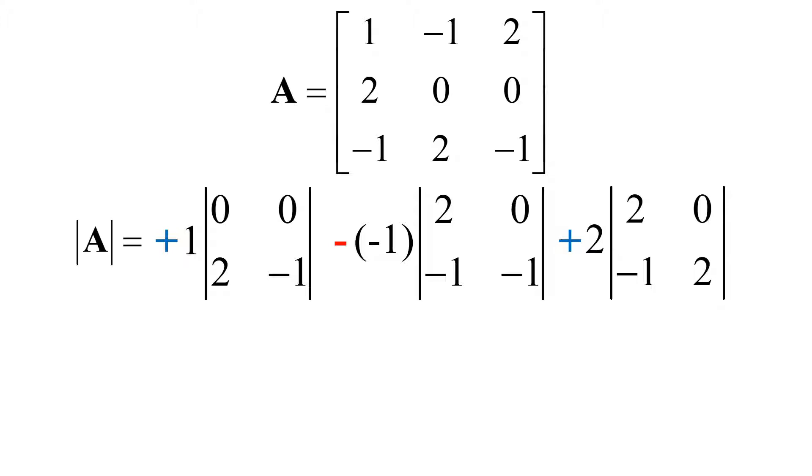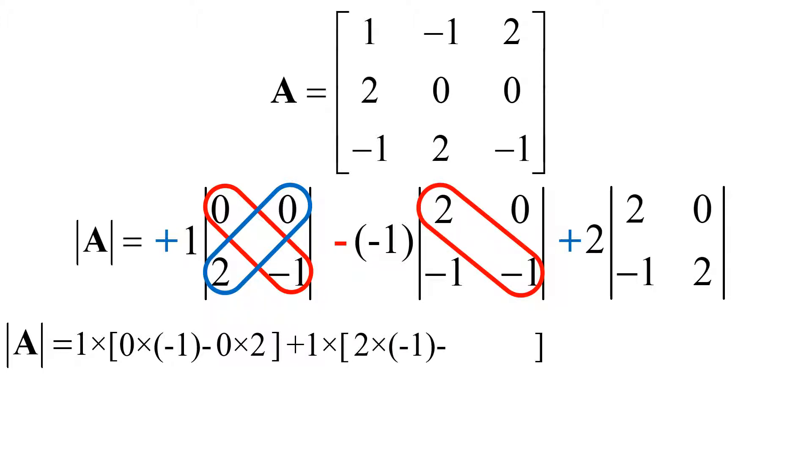Next is to expand the expression above. Remember, the determinant of a 2x2 matrix can be calculated by multiplying two elements in the diagonal minus multiplying two elements in the off-diagonal. First term is 1 multiplied by 0 by minus 1 minus 0 by 2. The second term is 1 multiplied by 2 multiplied by minus 1 minus 0 by minus 1.